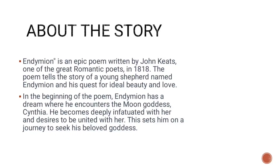Now let's understand the story. Endymion is an epic poem written by John Keats in 1818. The poem tells the story of a young shepherd named Endymion and his search for ideal beauty and love. In the beginning of the poem, Endymion has a dream where he encounters the moon goddess — here called Cynthia, actually Selena. He becomes deeply infatuated with her and desires to be united with her.